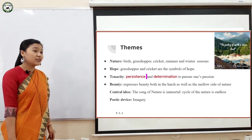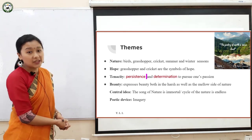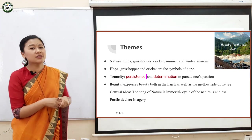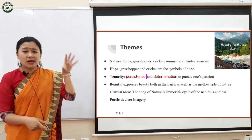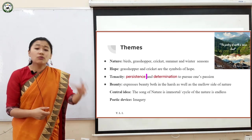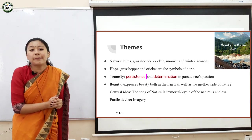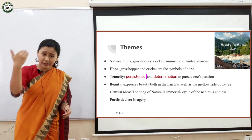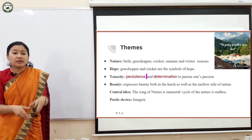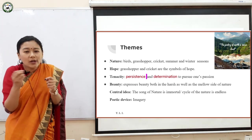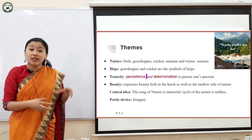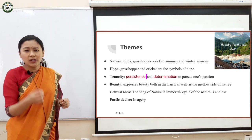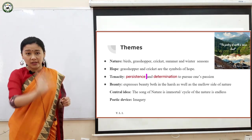Beauty is another important theme you will find in the works of John Keats. The poem expresses beauty both in the harsh as well as the mellow side of nature. When summer is extreme, the grasshopper becomes a beautiful thing happening in that season. And the cricket's voice in the extreme freezing winter comes like warmth to your heart — it puts you at ease and gives you happiness. There is always beauty; even in the darkest period, if you look for it and believe in yourself, you will find small beauty sparkling somewhere in the depth of darkness.